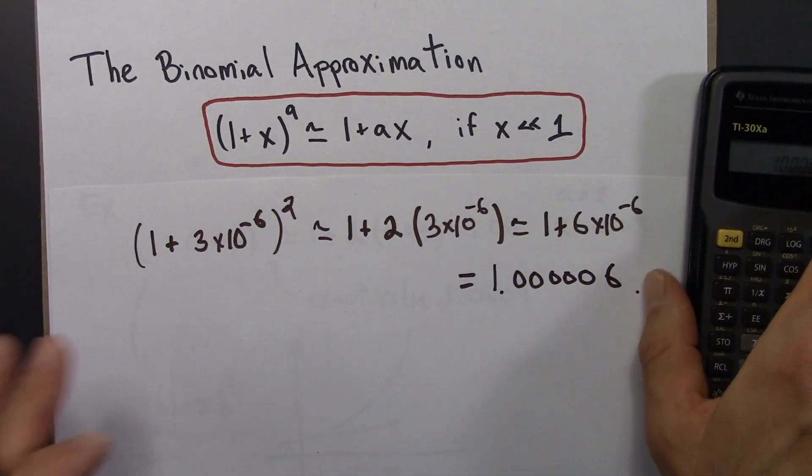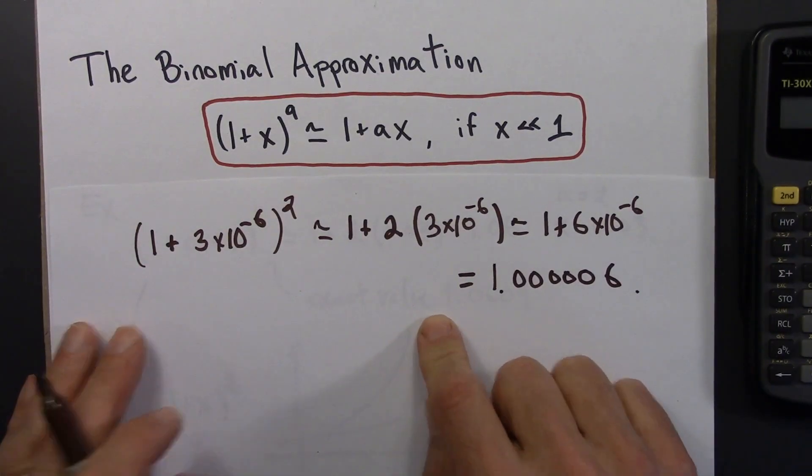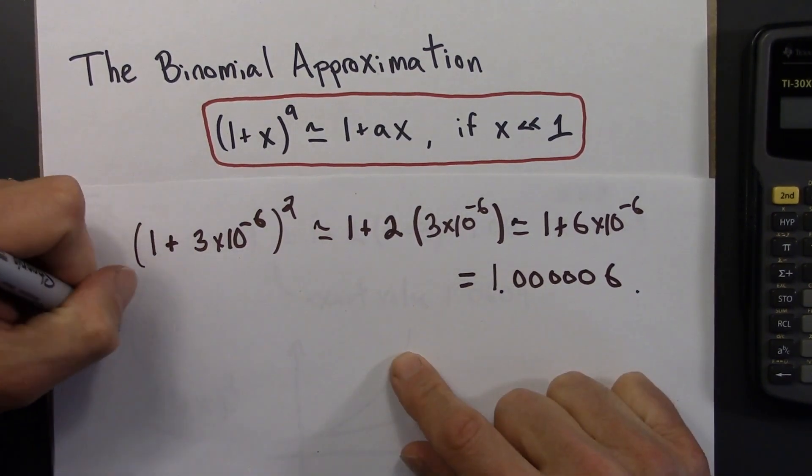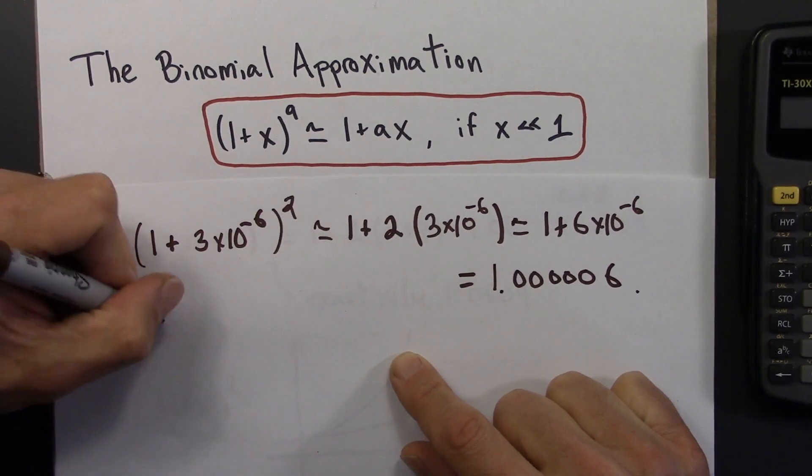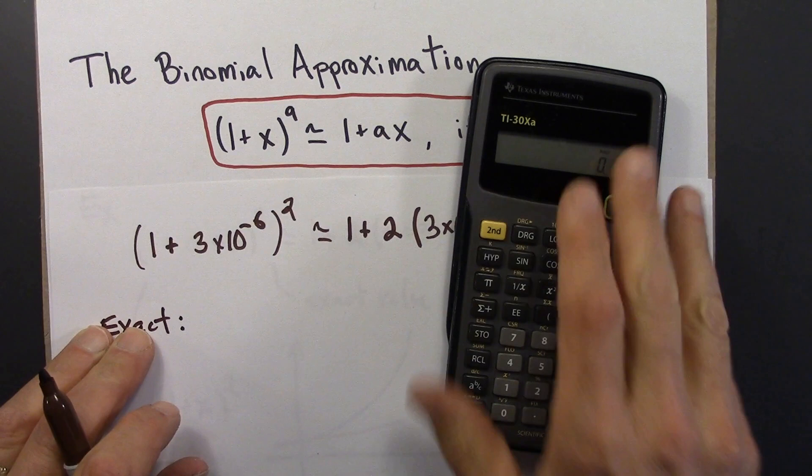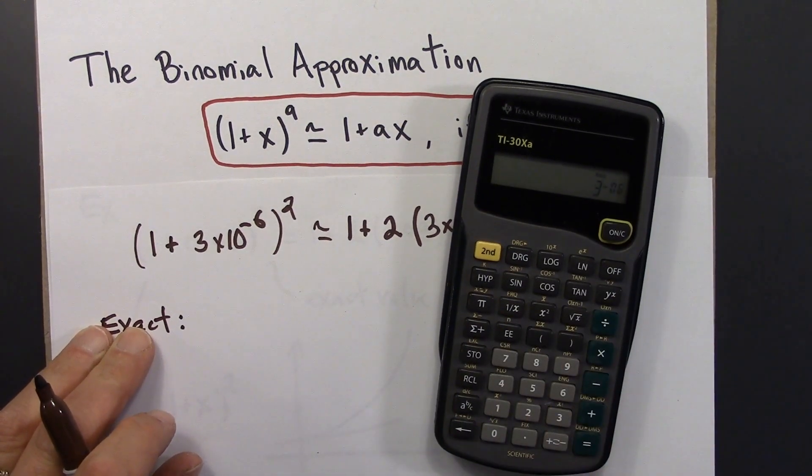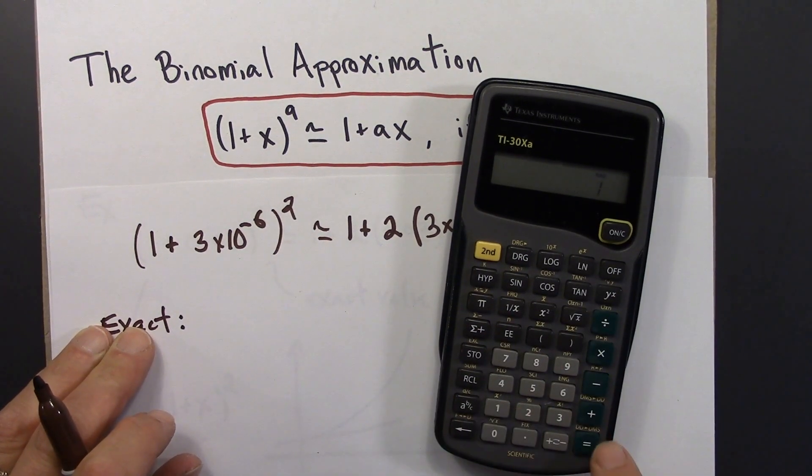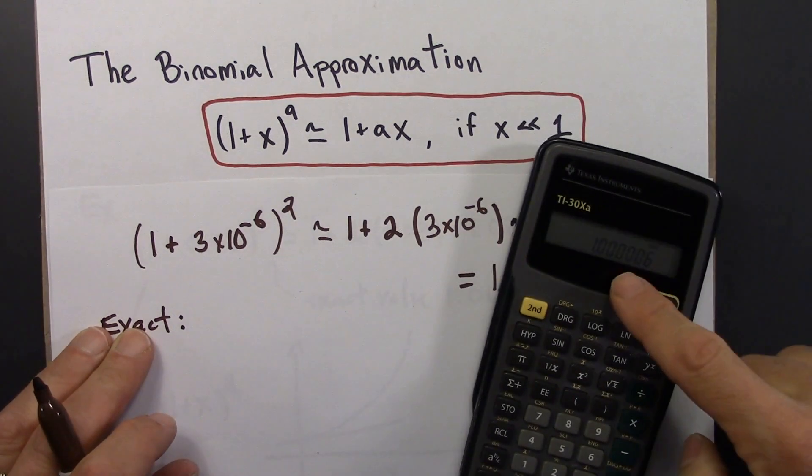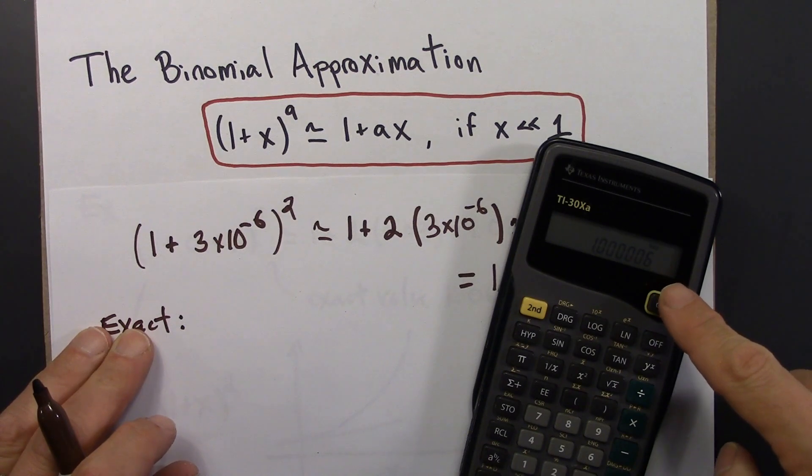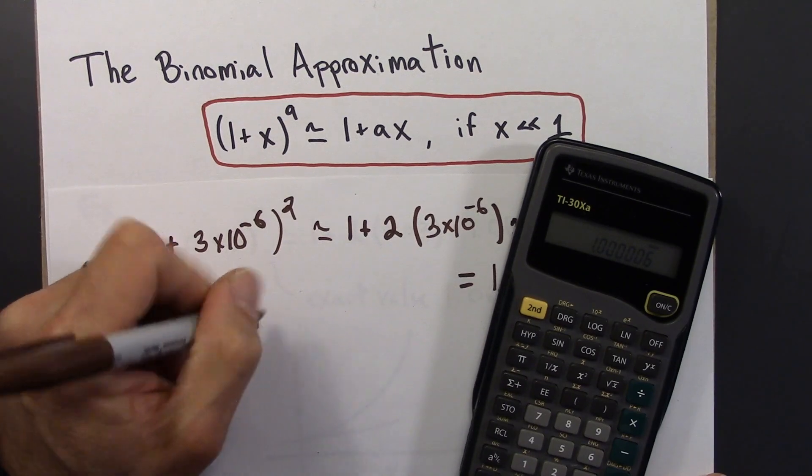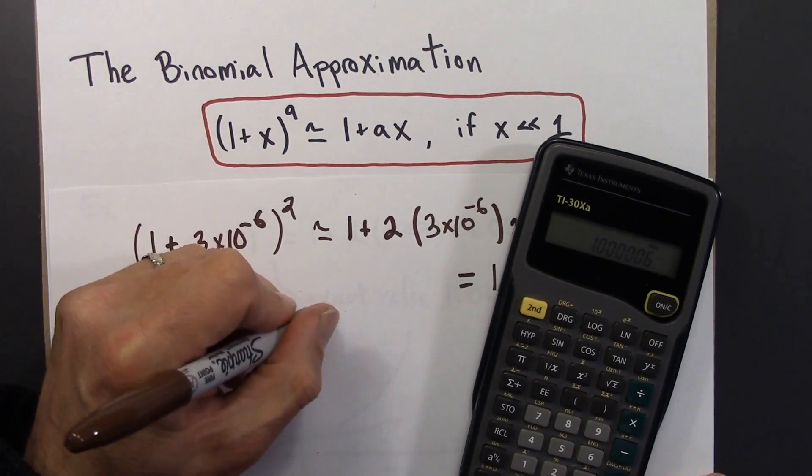I could also do an exact value. I'll just evaluate that directly on a calculator. 3×10⁻⁶ plus 1, square it. And my calculator tells me the exact same thing. 1.0000006.